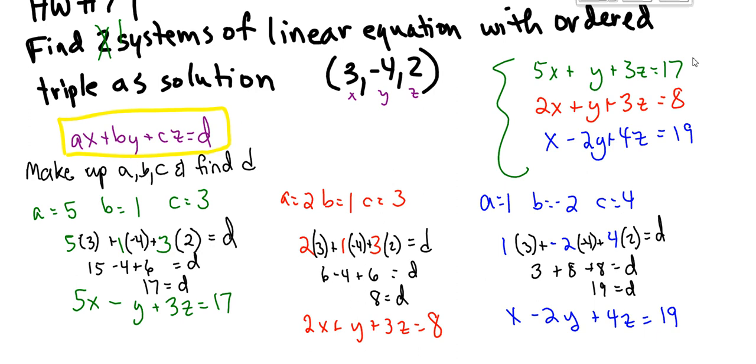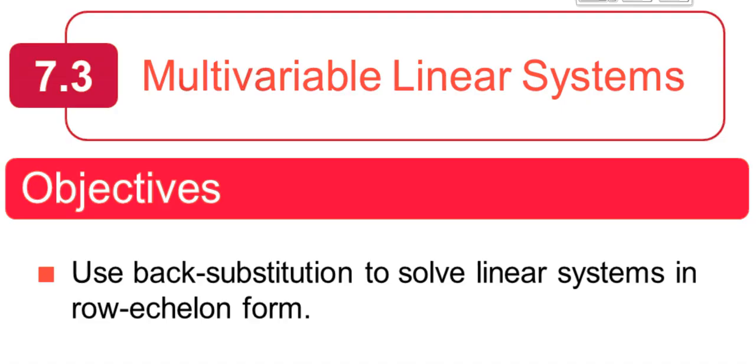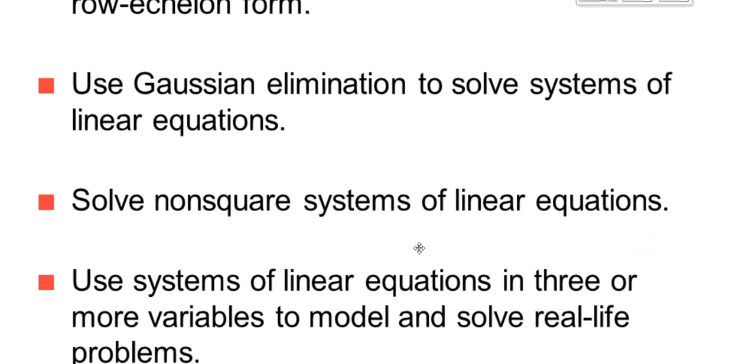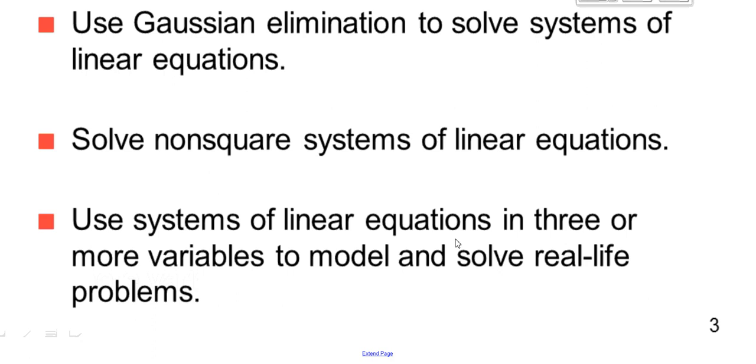So finally, that does conclude this section 7.3, multivariable linear systems. You should be able to use back substitution to solve linear systems in row echelon form, use Gaussian elimination to solve systems of linear equations and solve non-square systems of linear equations, and use systems of linear equations in three or more variables to model and solve real-life problems. This last one, you 100% want to be practicing. The actual processes that we use is not very different than elimination that we've used for a long time, but of course, it's much more complicated because we have more equations, more unknowns. This concludes 7.3.